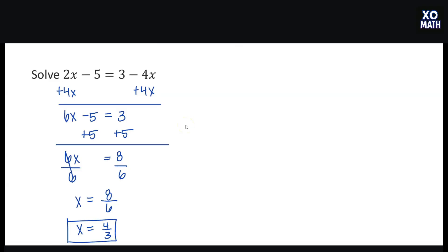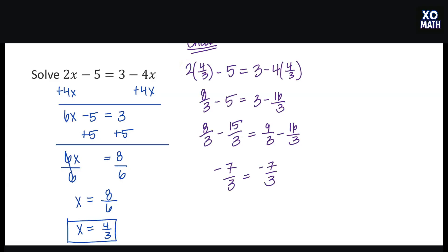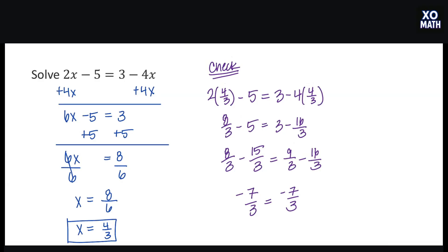As a quick reminder before we move on, we can always check our work. We can substitute 4 thirds into the original equation for each x and make sure the left side equals the right side. When we substitute 4 thirds and simplify — which involves subtracting some fractions — we end up with negative 7 thirds equals negative 7 thirds, a true statement, verifying 4 thirds is the solution.